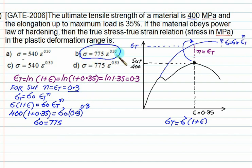There are two choices with n = 0.3. We need to determine whether sigma-0 is 540 or 775. The correct answer is 775.